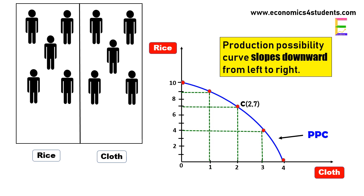Now if we want to increase the production of cloth to three units, then we have to shift one laborer from rice production to cloth production.